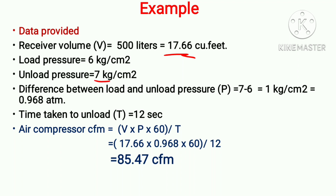The compressor loads at 6 kg and unloads at 7 kg. The difference between load and unload pressure is 7 minus 6, which equals 1 kg per square centimeter. We convert this pressure difference to atmospheric pressure: 1 kg/cm² equals 0.968 atmospheres. The time taken to load to unload is 12 seconds.